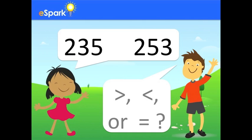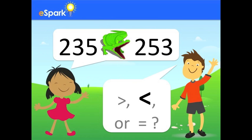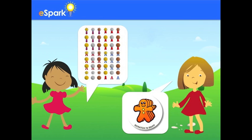Great job, Elliot! So, which symbol goes in between these two numbers? Greater than, less than, or equal to? Remember, the alligator always wants the biggest meal. If you said less than, you're right! The alligator wants to eat Elliot's number because then he gets the bigger meal. Thanks for your help, you guys!